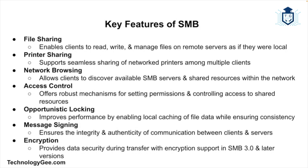Key features of SMB include file sharing, which allows clients to read, write, and manage files on a remote server as if they were local. There's printer sharing enabling multiple clients to use network printers, and network browsing so clients can discover available SMB servers. Access control provides robust permission mechanisms for admins, opportunistic locking improves performance by allowing clients to cache file data locally, message signing ensures integrity and authenticity, and SMB 3.0 and later versions support encryption to enhance data security.